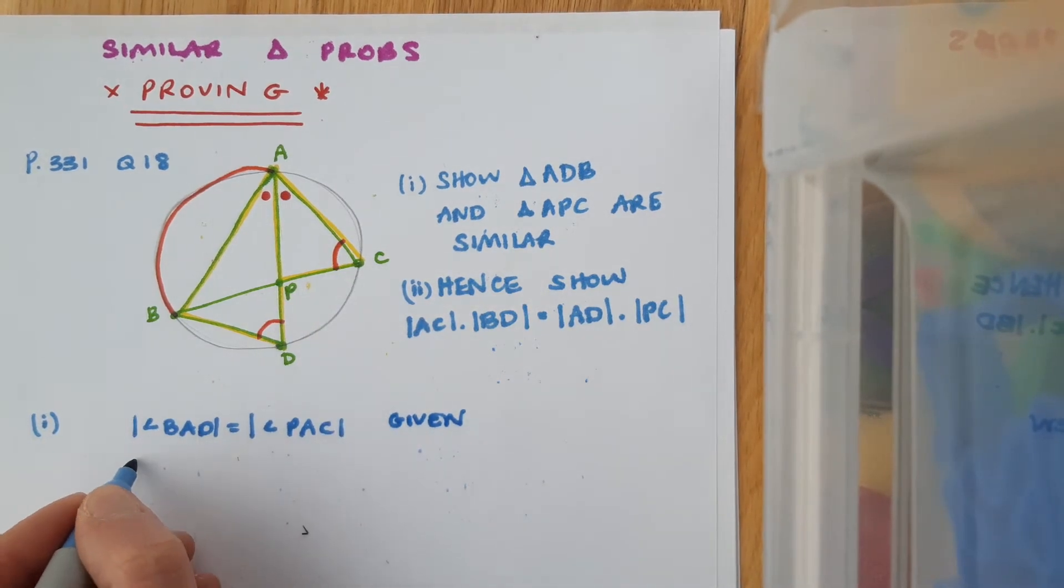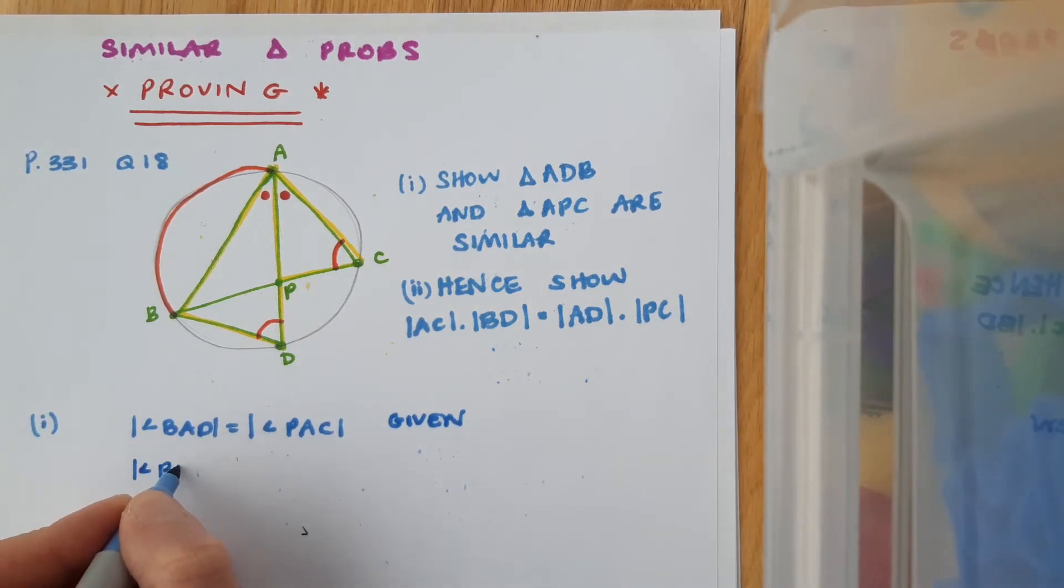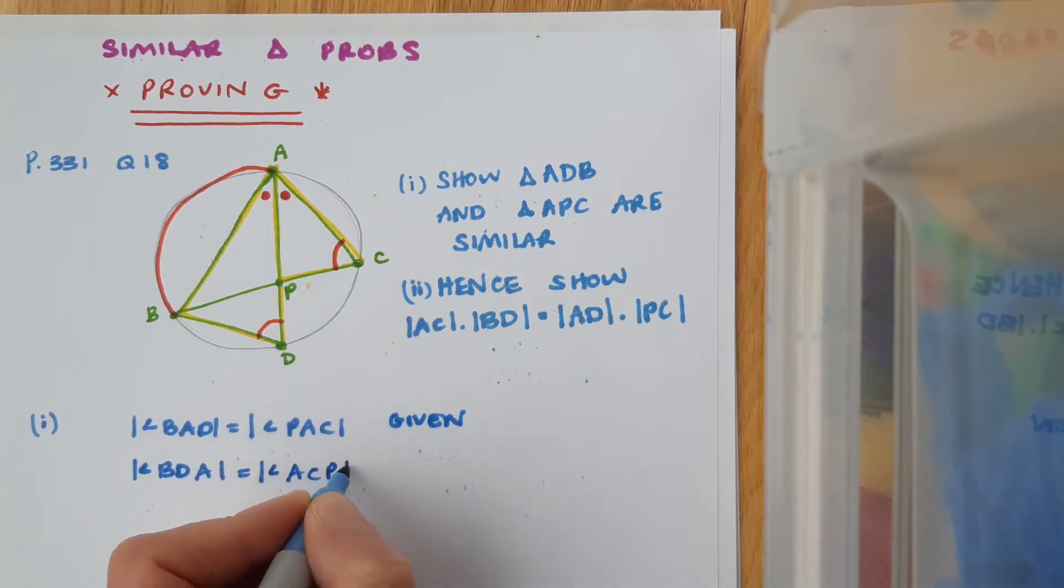These two angles here are equal as well. Angle BDA equals angle ACP. The reason for that is on the same arc.